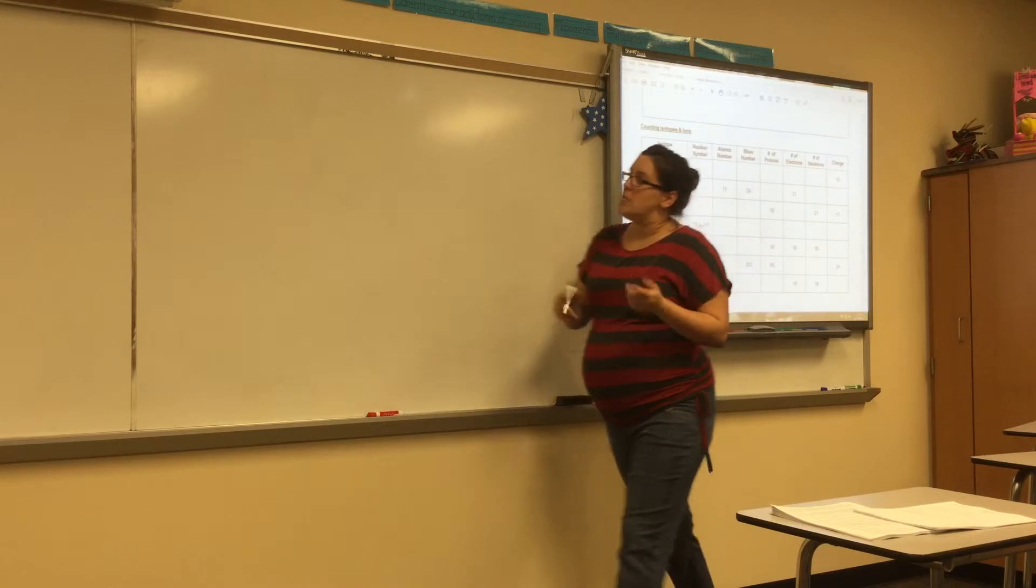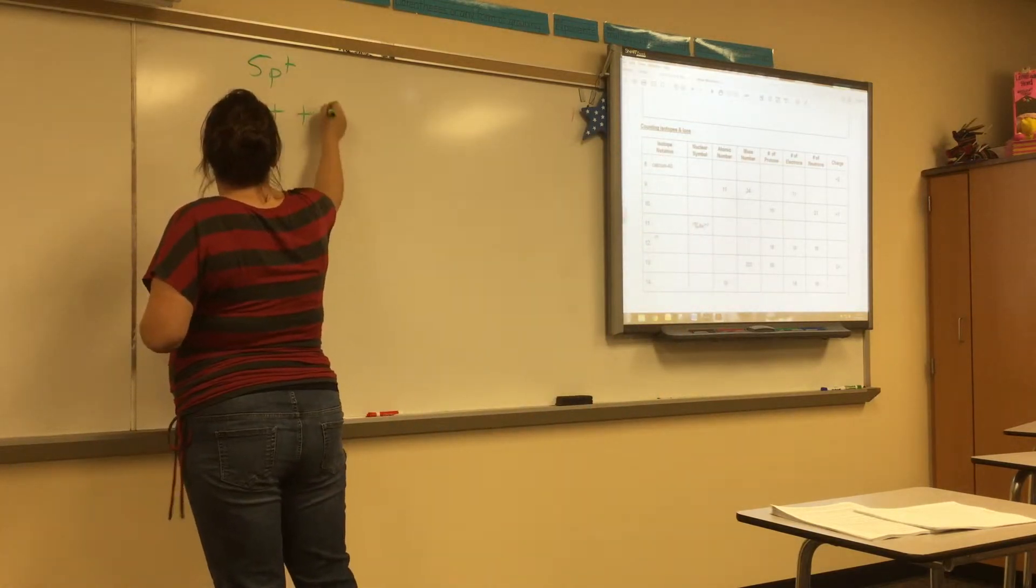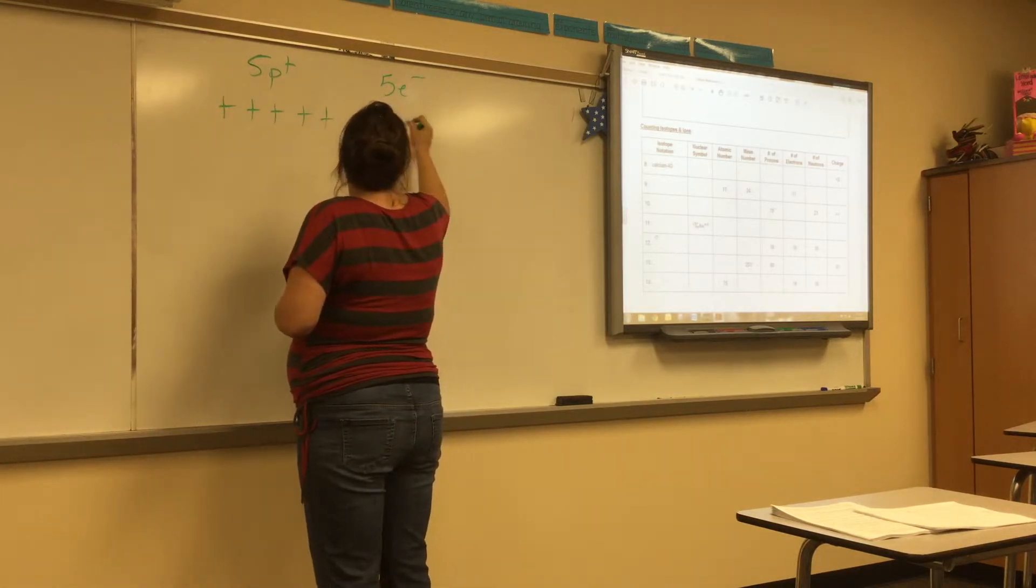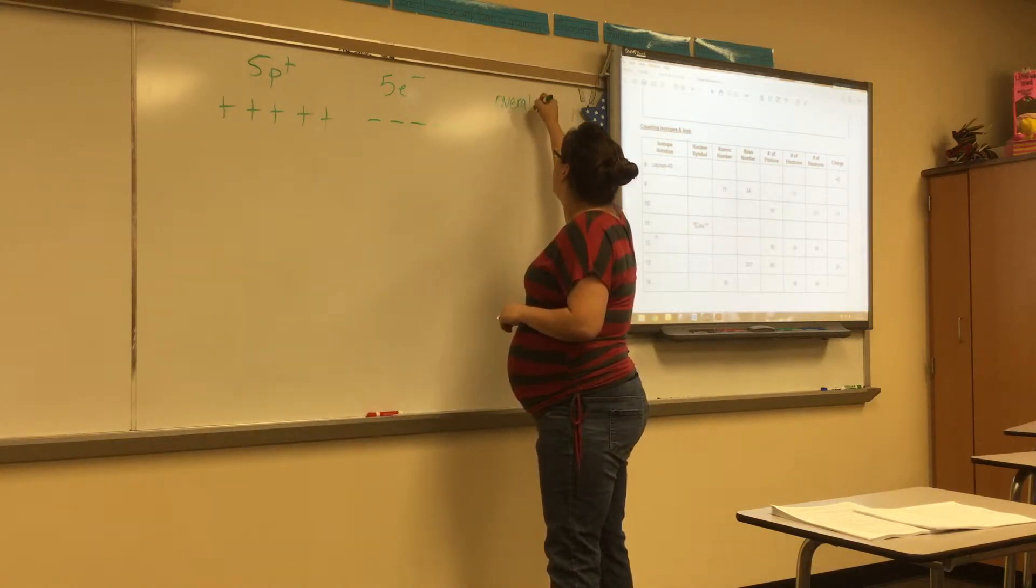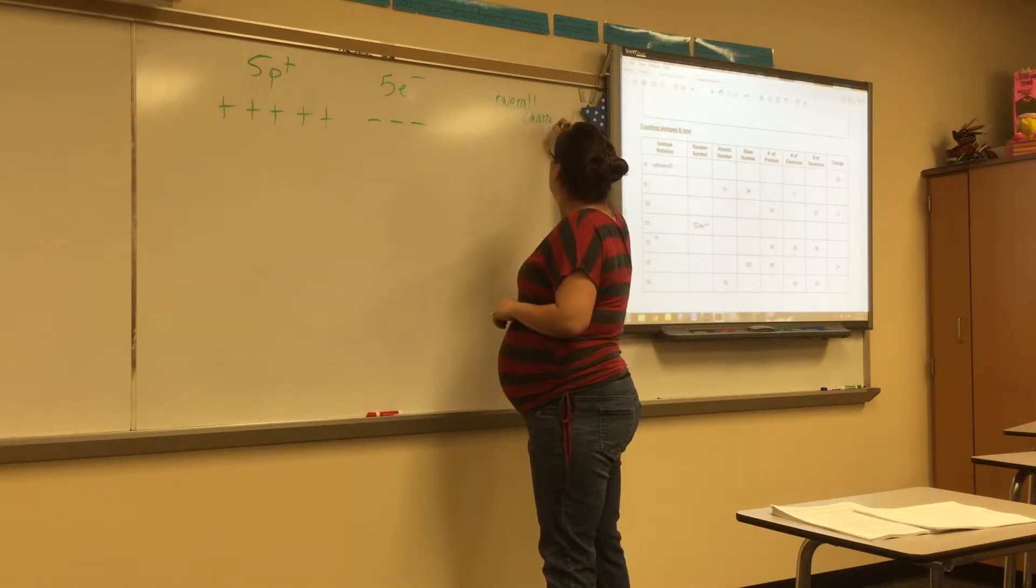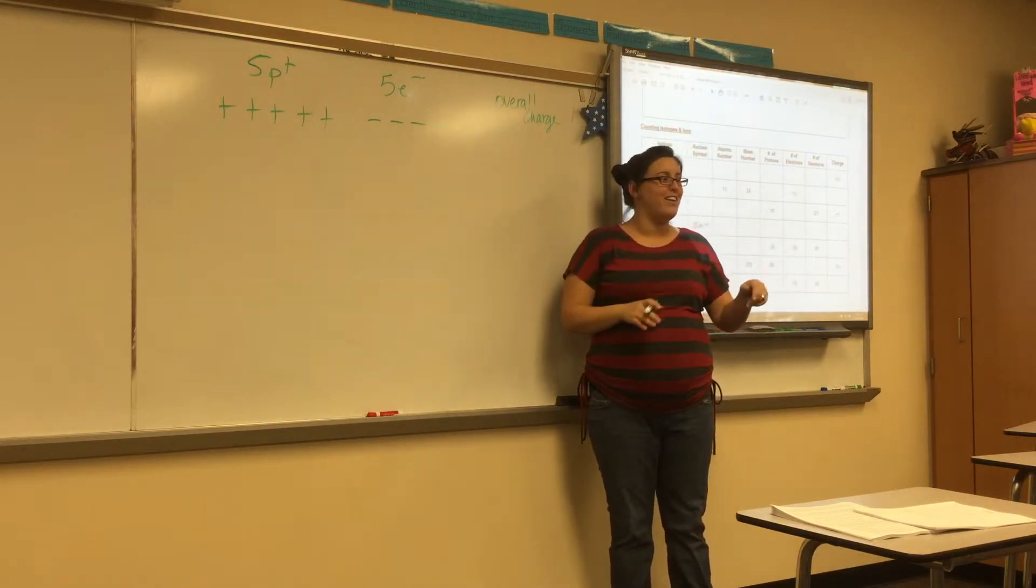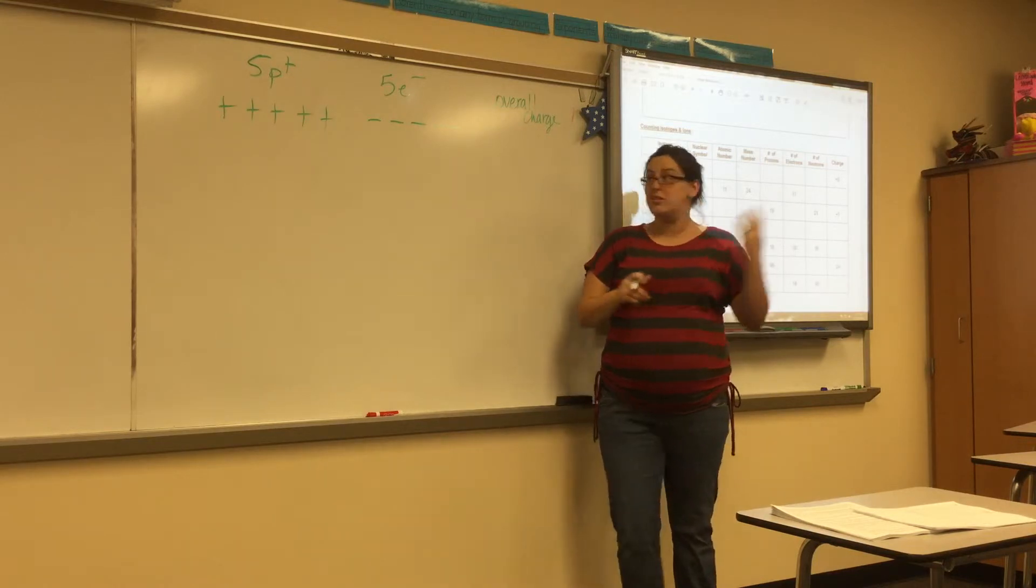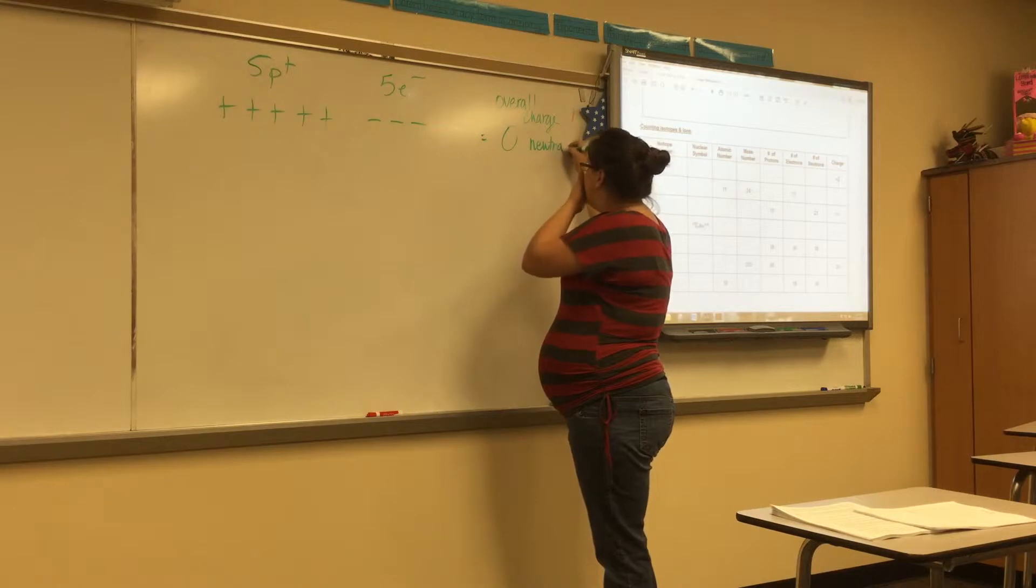Now, let's look at something real quick. If I have 5 protons, and visually 5 plus signs, right? And 5 electrons, what would my overall charge be? Don't overthink it. What would it be? 5 positive and 5 negative. It would be 0, right? And we would call that neutral. Correct?